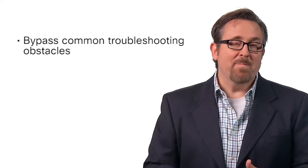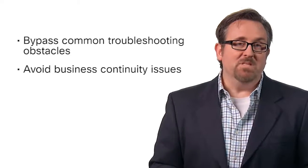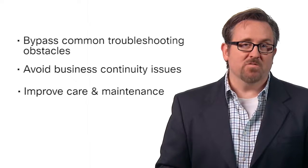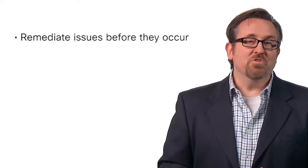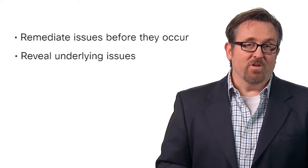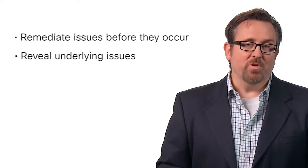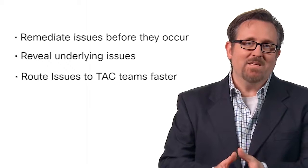Acting on these insights helps you expedite support by bypassing common troubleshooting obstacles and avoiding many business continuity issues by improving routine care and maintenance practices for your network. For example, addressing critical alerts up front may remediate issues before they even occur. It may also reveal underlying issues faster. Accurate identification of any issue enables your service request to be directed to the right TAC team faster, even avoiding the need for multiple TAC touchpoints.